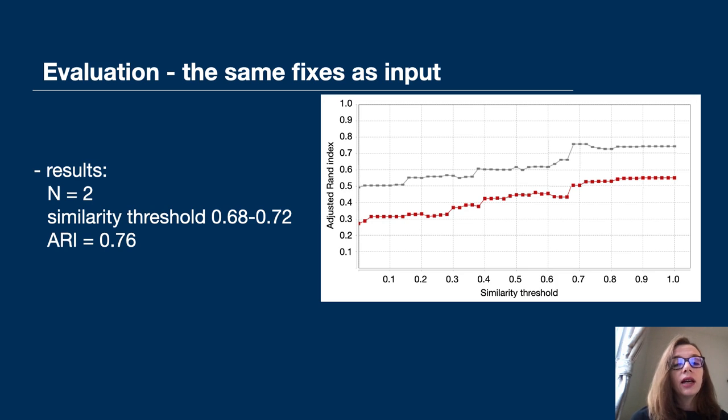That's why we calculated similarity and ran our clustering algorithm on fixes automatically generated by T-bar, and we calculated the agreement again. The best agreement was again for n-grams length 2, for the similarity threshold between 0.68 and 0.72, and the value of the adjusted rand index was 0.76, which shows a very good agreement between clusters.